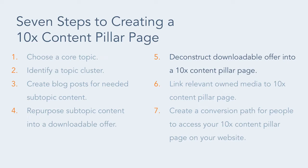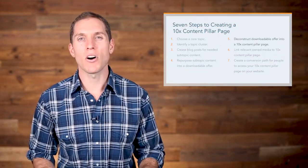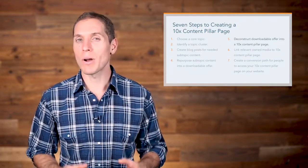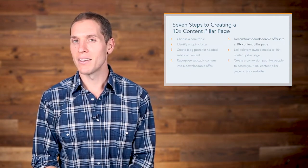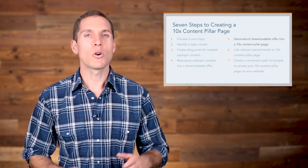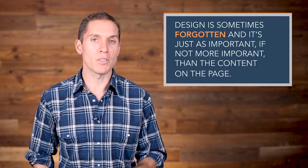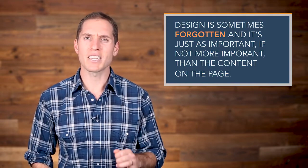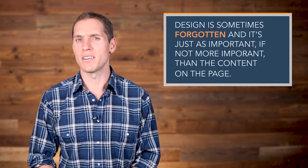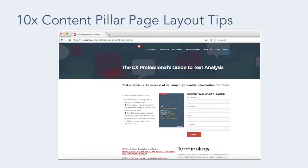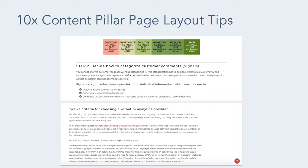Fifth, Etuma deconstructed their downloadable offer into a 10x content pillar page. Etuma took the same content offered in their guide and formatted it to fit on a website page. We all know content is king — Matt Cutts, formerly with Google, coined this phrase many years ago — but design is sometimes forgotten, and it's just as important, if not more important, than the content on the page. You want people to have a positive experience when they're reading your content. Think about the last bad experience you had at a restaurant you visited. Did you go back? To make sure your 10x content pillar page provides a positive experience, check out these 13 layout tips outlined on Etuma's example.